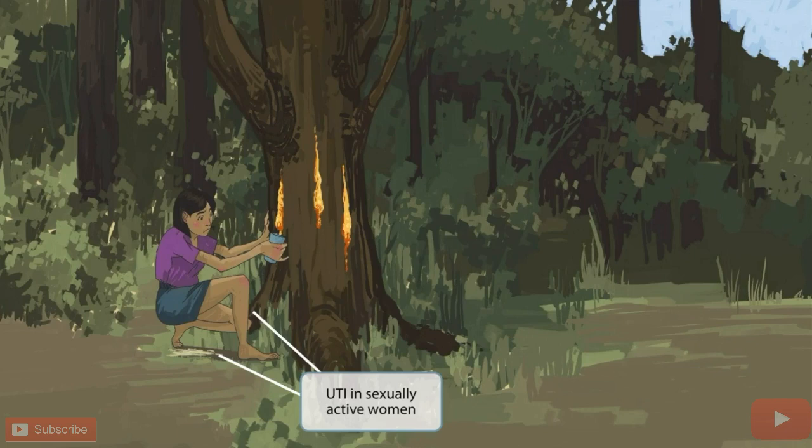Pay close attention to a few other details about this cartoon girl. She's a young, attractive-looking cartoon, and she also appears a bit frightened. She got so nervous that she accidentally urinated, and you can see the urine on the ground right below her. These ideas were shown in the image to help you remember that Staphylococcus is a common cause of urinary tract infections in sexually active women.